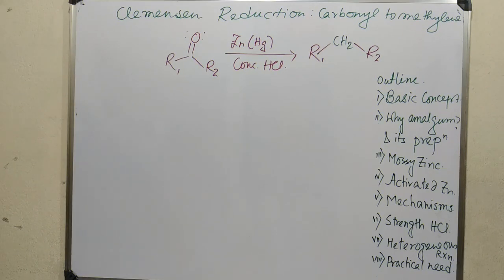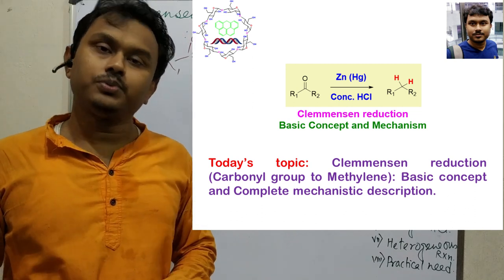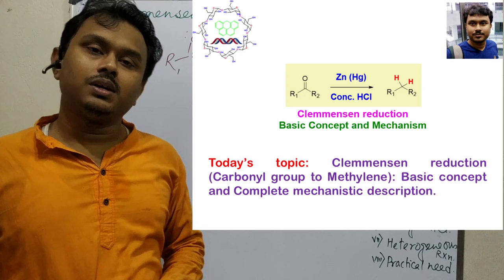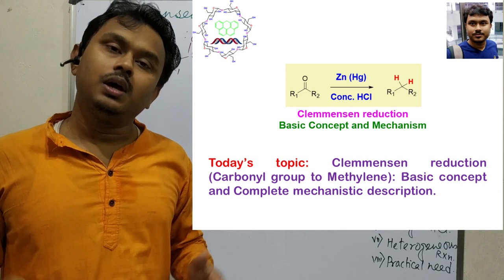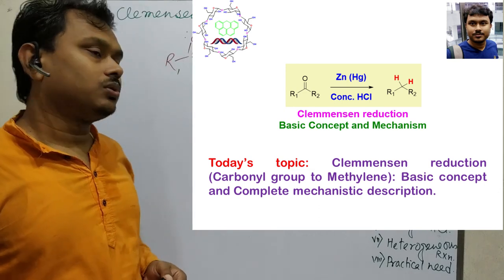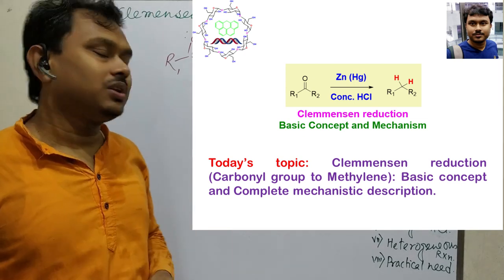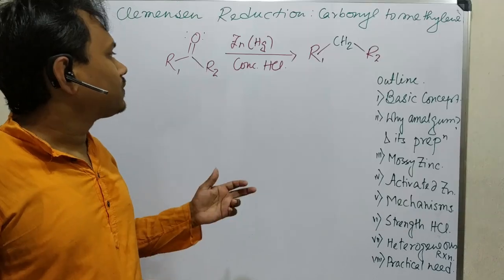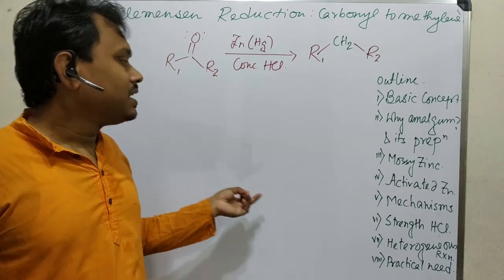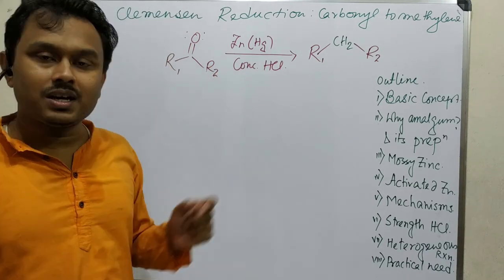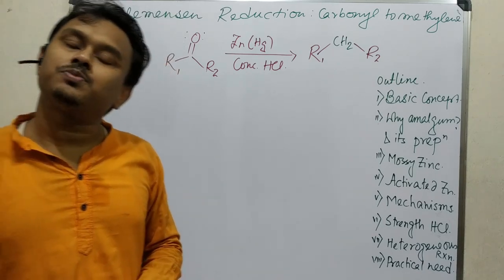Hello friends, I am Tanman and welcome to my channel Chemistry the Mystery of Molecules. Today we will learn about a redox reaction called Clemmensen reduction — the conversion of a carbonyl group into a methylene group. We will discuss the basic concept, the requirement of amalgam and its preparation using mossy zinc, the need for amalgamated zinc and its mechanism, the requirement of HCl concentration, and the heterogeneous reaction with its practical applications.